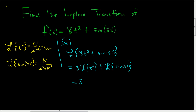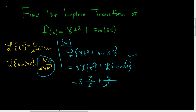This is equal to 8, and here the exponent is 2, so it's 2 factorial. On the bottom it's one power higher, so 2 plus 1 is 3. Plus, in the formula k is 5, so it's 5 in the numerator, and in the denominator it's s squared plus 5 squared. This equals 16 over s cubed plus 5 divided by s squared plus 25.